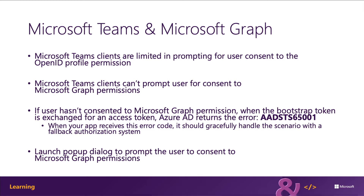All Microsoft Teams apps that implement SSO must also have an associated Azure AD app registered. The Azure AD app used for tab SSO shares many characteristics with bot SSO. All Azure AD apps used with Microsoft Teams SSO must have a client ID and client secret or certificate used to authenticate with Azure AD, and a list of API permissions that the app needs the user to consent to, such as user.read or mail.read. They must also obtain tokens with the OAuth 2 implicit flow.